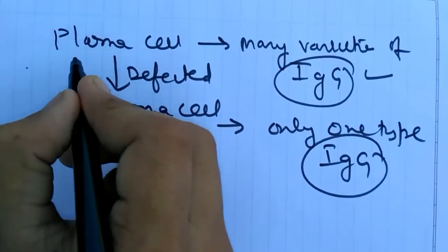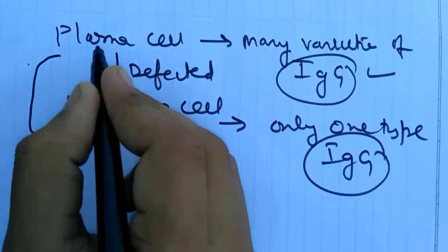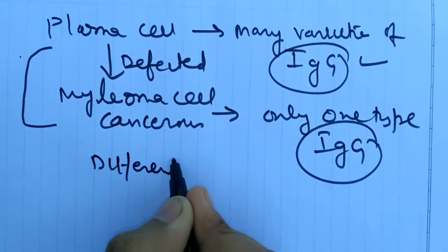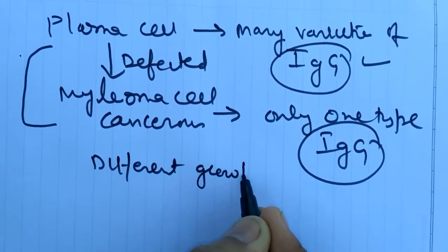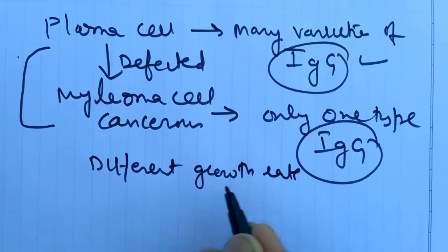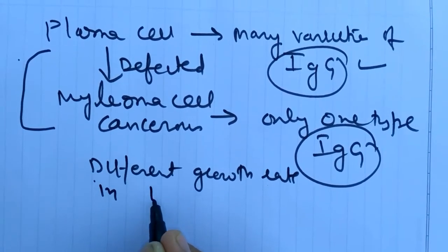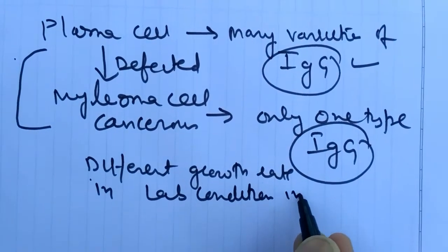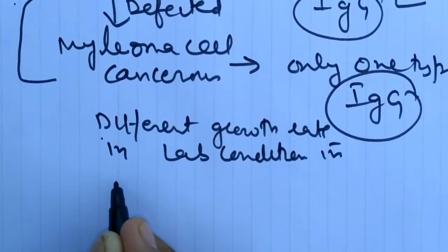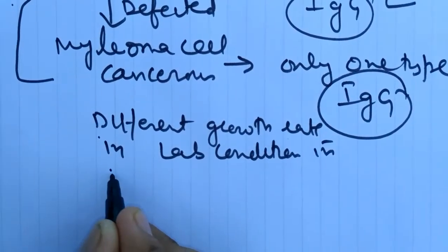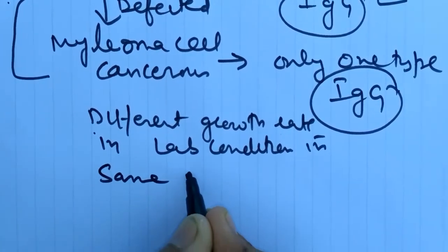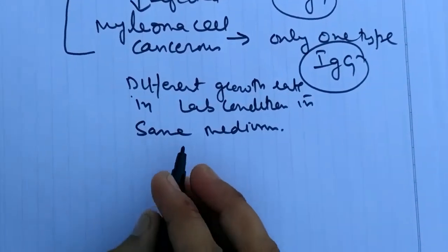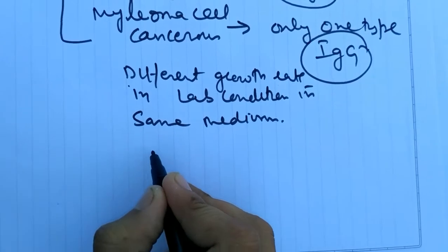Both cells, healthy as well as unhealthy cells, have different growth rates in lab conditions, in different medium or in same medium.